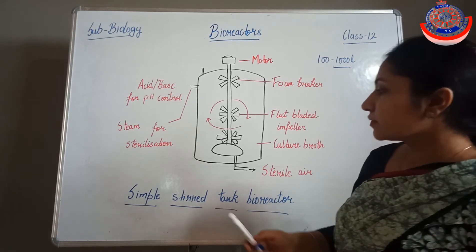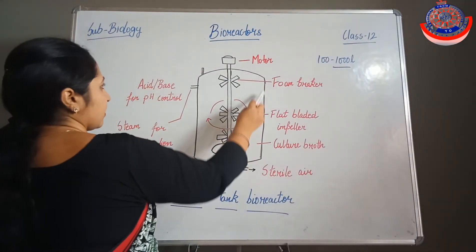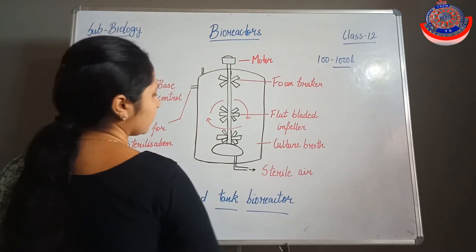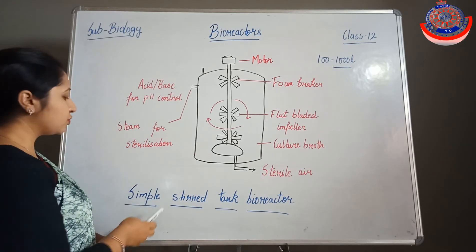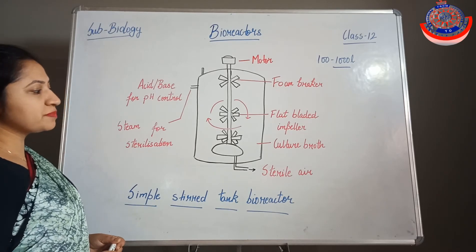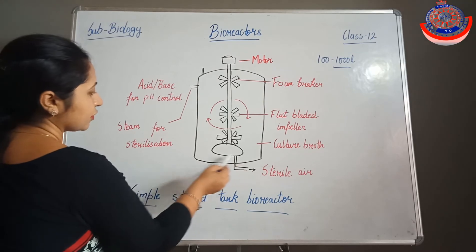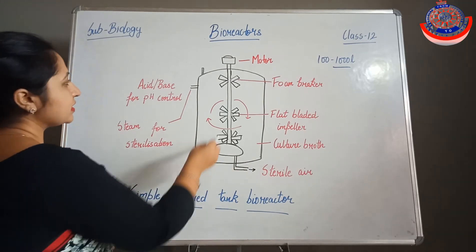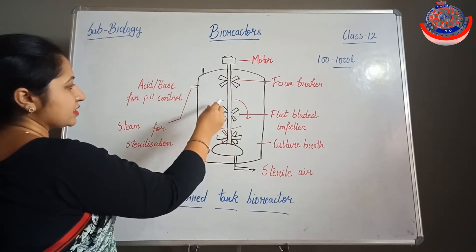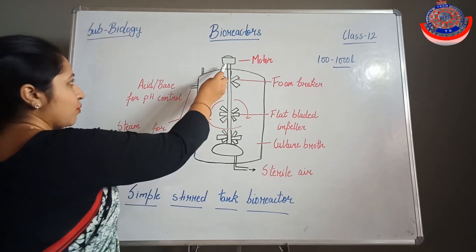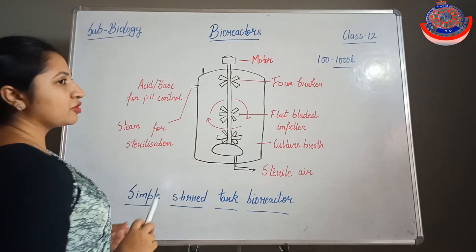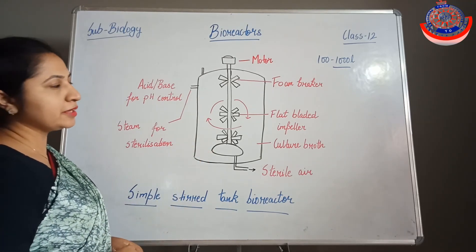This vessel is curved at the bottom. That is the main difference between the simple stirred tank bioreactor and the sparger type. In the case of the sparger, it is flat from the bottom. The blades are present in the vessel, with the motor present at the upper part of the vessel. These blades are not present in the case of the sparger type bioreactor.